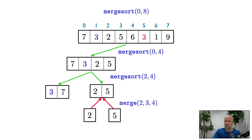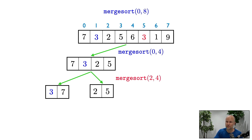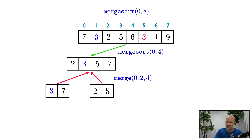Now we call the merge function. We're back to the call of merge sort(2, 4) and we merge these two vectors — 2 and 5. They're already in the right order so there's nothing to do here. That concludes the call of merge sort(2, 4). So now we return to the call of merge sort(0, 4) and the next thing to do there is to run merge.